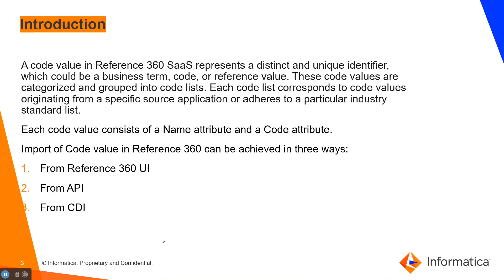A code value in Reference 360 CES represents a distinct unique identifier, which could be a business term, code, or a reference value. These code values are categorized and grouped into a code list, with each code list corresponding to its code values. Each code value consists of a name, attributes, and a code attribute.